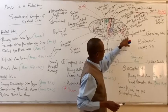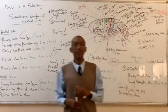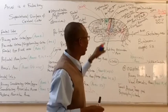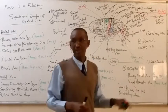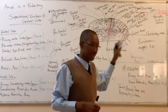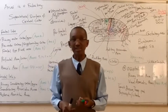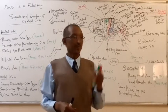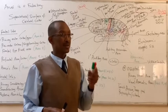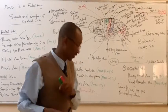Area 17 is referred to as the primary visual area. Areas 18 and 19, which are anterior to area 17, are referred to as visual association areas.